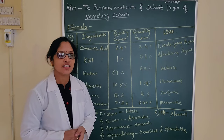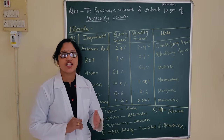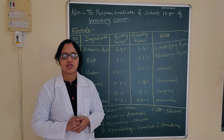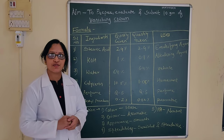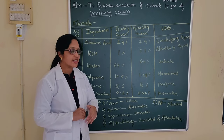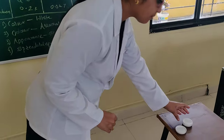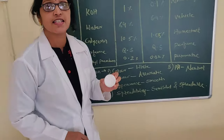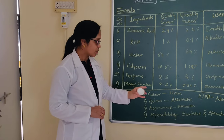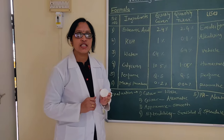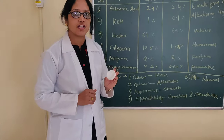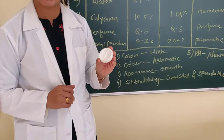So we have seen how vanishing cream is formulated. Now it is very necessary to look at the evaluation parameters for the cream: colour, odour, appearance, spreadability, and pH. We have checked all these parameters. The colour of our cream is white, the odour is aromatic, it has a very smooth appearance, a semi-solid consistency, and spreadability is very good. We also checked the pH and it is neutral.